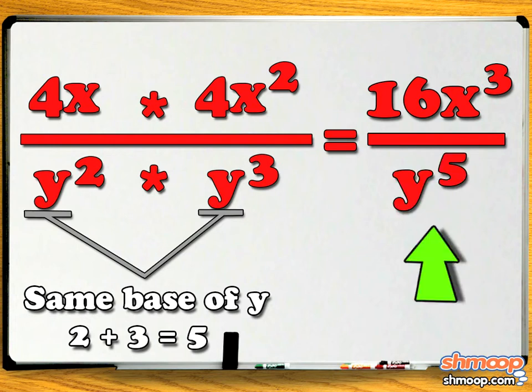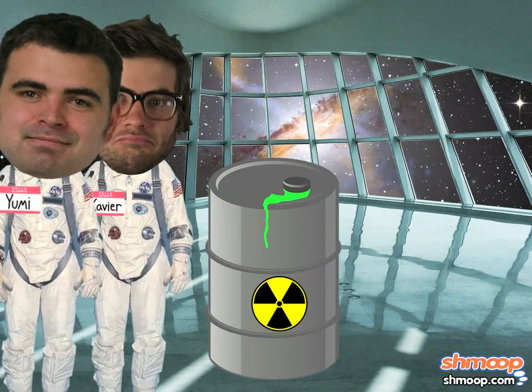So the answer is 16x cubed over y to the power of 5. And on the space station orbiting Jupiter, this result means that it's Xavier's turn to take out the plutonium.